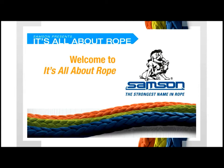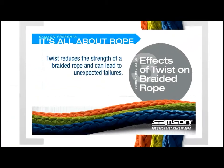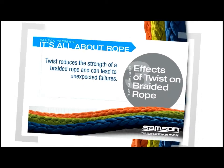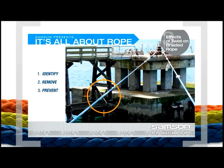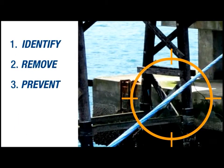Twist reduces the strength of a braided rope and can lead to unexpected failures. In order to avoid this, it is important to be able to identify twist in a rope, take appropriate actions to remove it from the line, and prevent further twisting.